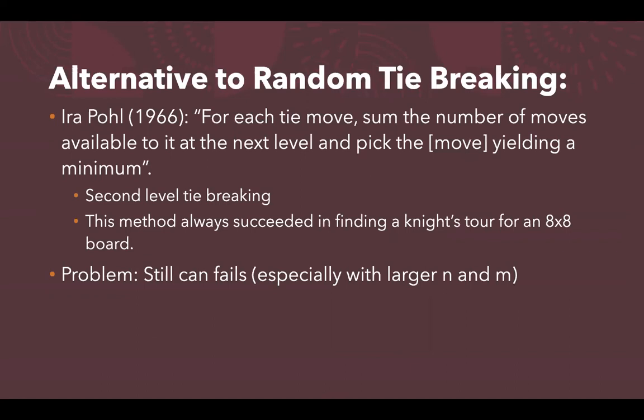In 1966, Iropole came up with a method to deal with arbitrary tie-breaking called second-level tie-breaking: for each tied move, you sum up the number of moves available at the next level and pick the move yielding the minimum. This is essentially applying Warnsdorf's rule one level deeper to resolve ties. This method was successful in finding tours on an 8×8 board for all starting nodes. However, it still failed at times, especially with larger values of M and N.